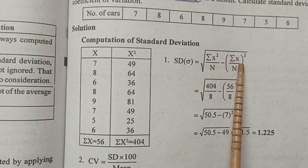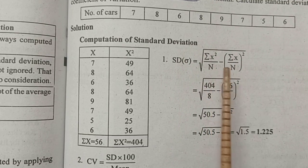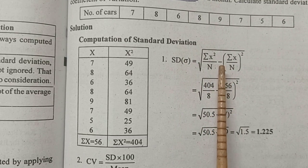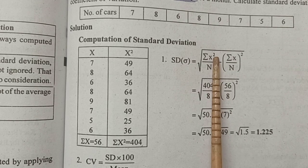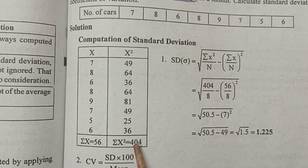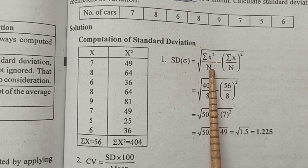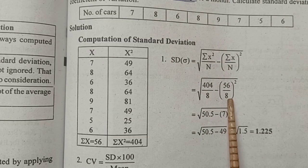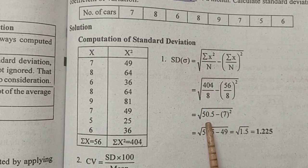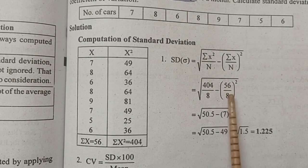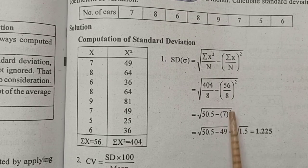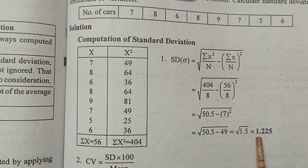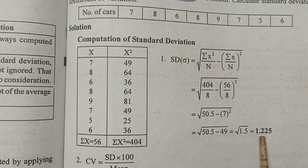Now substitute values into the standard deviation formula. Sigma x-squared is 404, divided by n. That gives 50.5, minus 56 by 8, which is 7, squared — that is 49. Answer: square root of 1.5, which equals 1.225. That is the standard deviation.